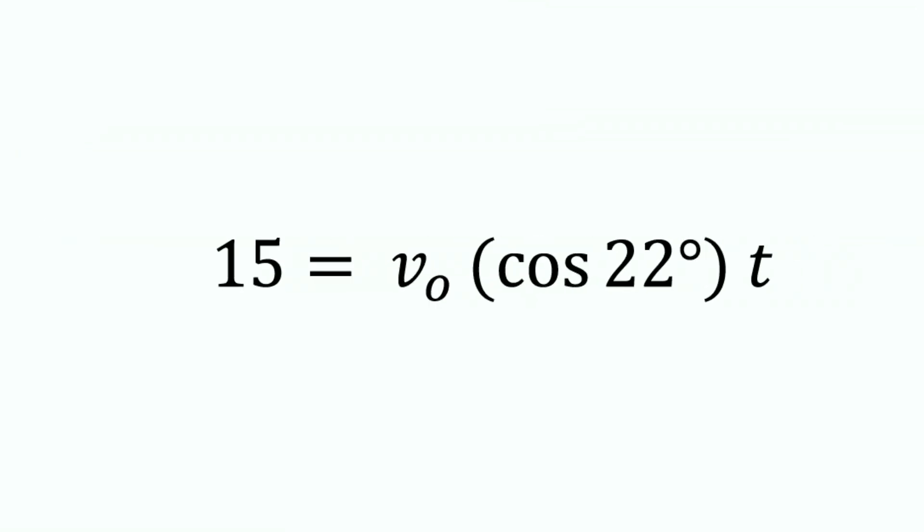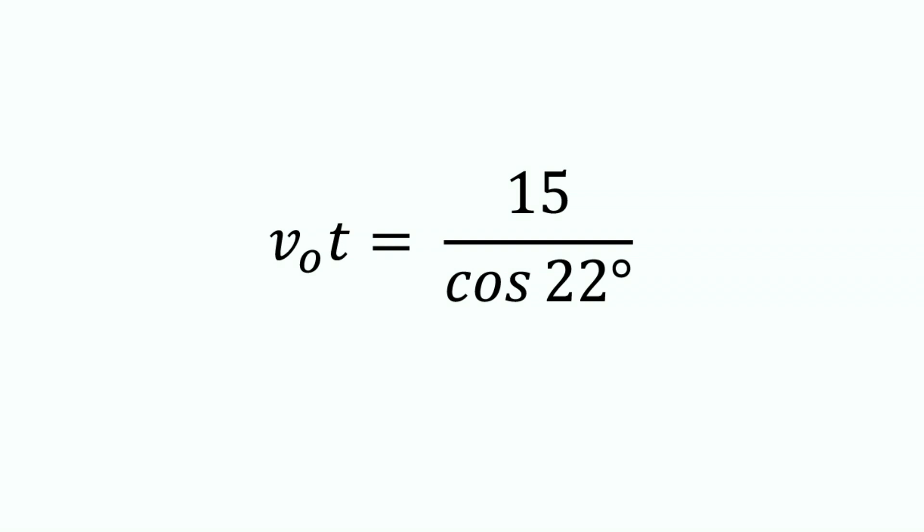Using the displacement equation and the x component of displacement, I have 15 equals v-naught cosine 22 times t. Now I will solve for v-naught t.